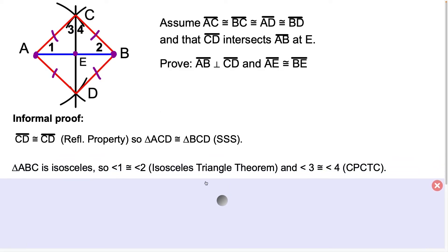And from here what we could say is that triangle ABC is isosceles, and we know this triangle is isosceles because it has two sides that are equal in measure. And from there we could say that angle 1 is congruent to angle 2 because of the isosceles triangle theorem. The angles that are opposite of the congruent sides are also congruent.